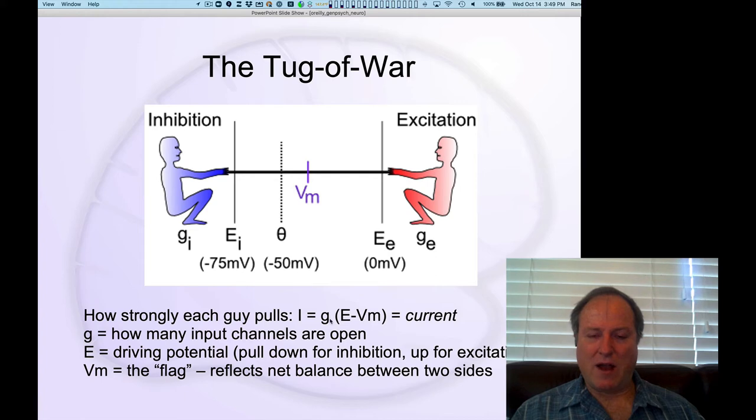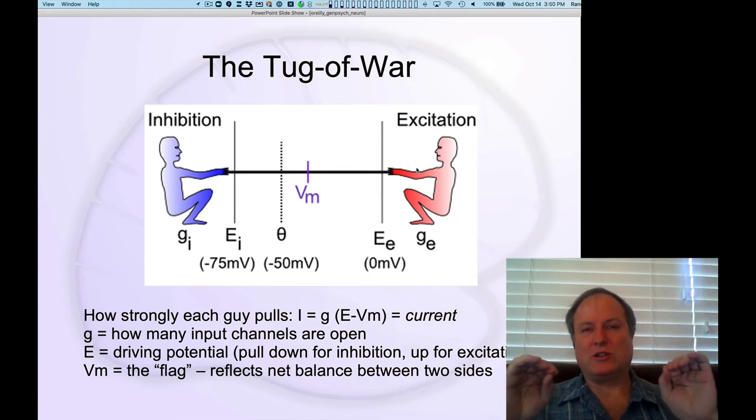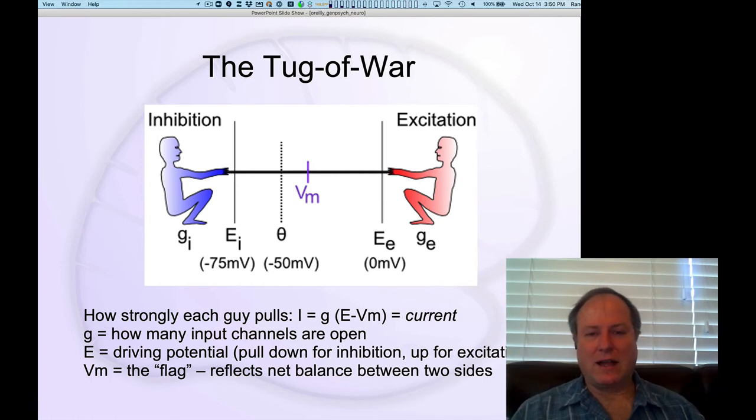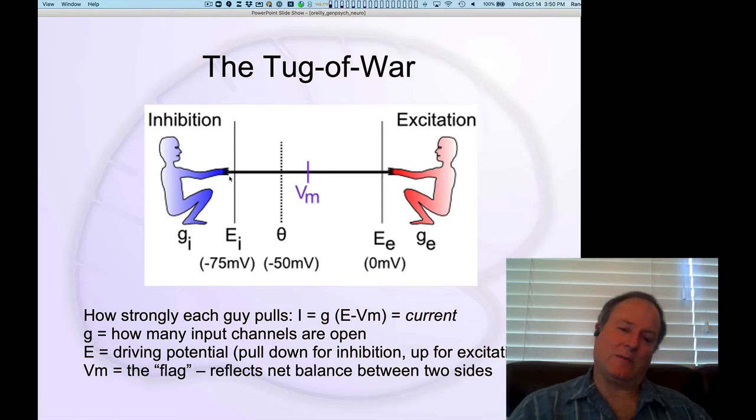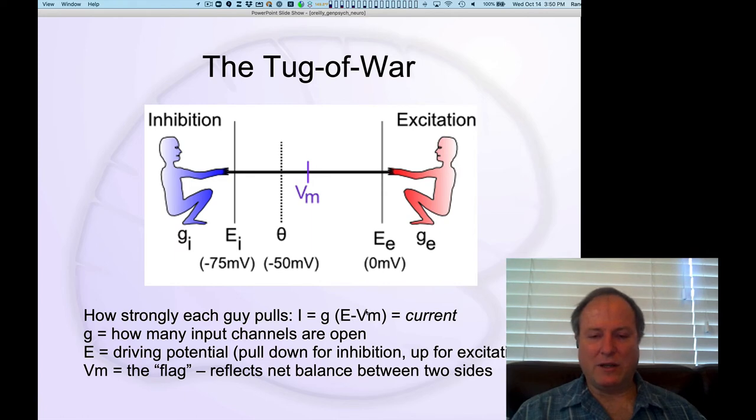And so G is kind of how big the pipes are. And then you have the driving potential, which is the reversal potential here, or the equilibrium potential, this point in this tug of war where the person is actually standing, pulling one way or the other. And so that's really the key thing. The excitation pulls up because of this particular number here, this excitatory driving potential. Inhibition pulls down because it has a different number and that tells it which way it's pulling relative to the current membrane potential.